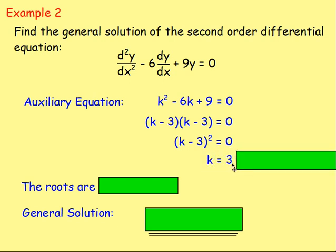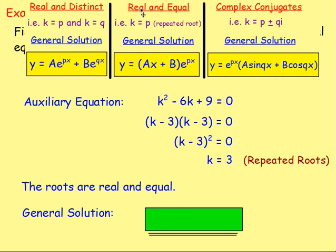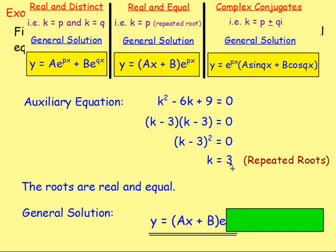The only value for k is going to be 3 — it is a repeated root, so p equals 3, and we have real and equal roots. When the roots are real and equal, the general solution is y equals (ax + b) e to the power of px. So our general solution here will be y equals (ax + b) e to the power of 3x.